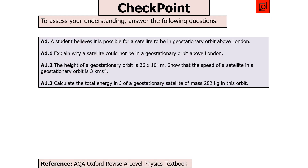The next question says: explain why a satellite cannot be in a geostationary orbit above London; show that the speed of a satellite in geostationary orbit (height 36 × 10⁶ m) is about 3 km/s; and then calculate the total energy of a geostationary satellite of mass 282 kg in this orbit. Pause the video now.